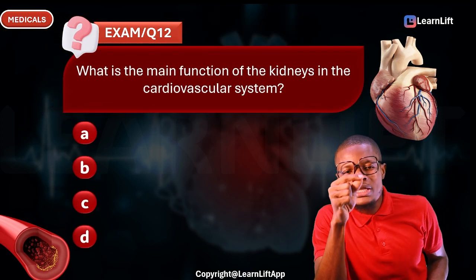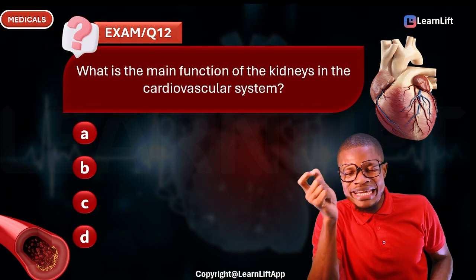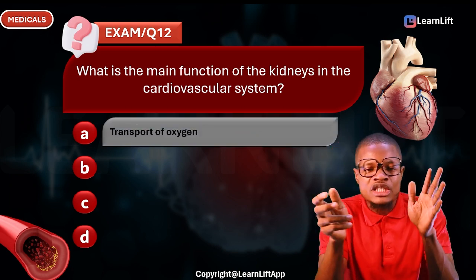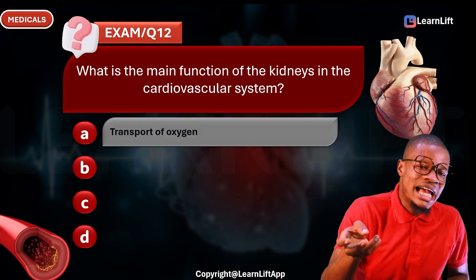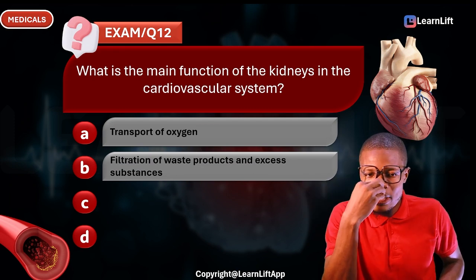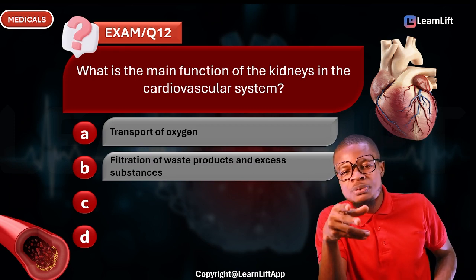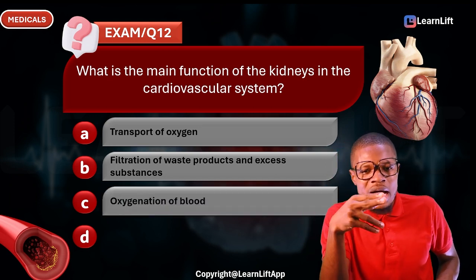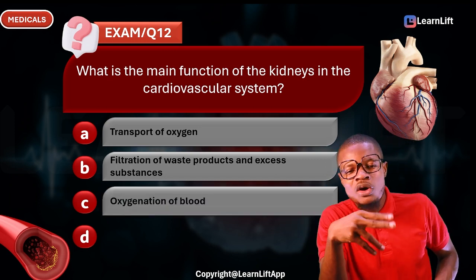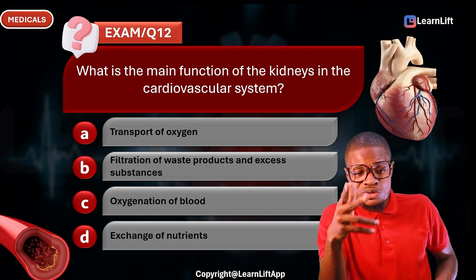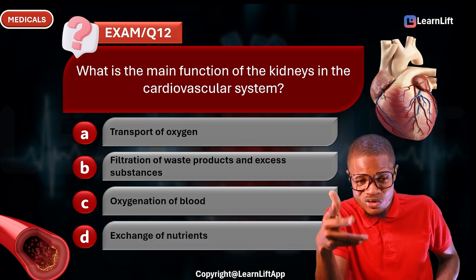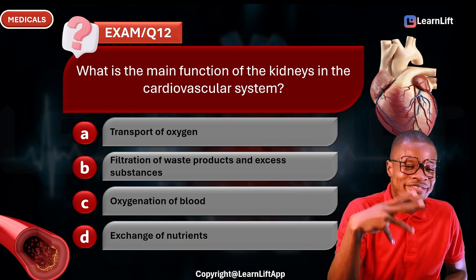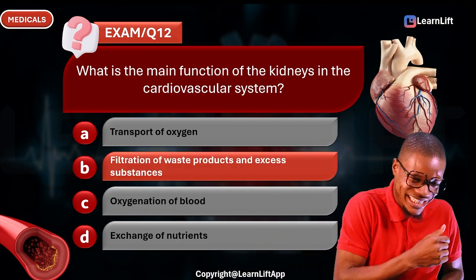Question twelve: What is the main function of the kidney in the cardiovascular system? Transport of oxygen is carried out by the lungs. Oxygenation of blood — also the lungs. Exchange of nutrients relates to the liver. The main function of the kidneys is filtration of waste products and excess substances — that is the correct answer.